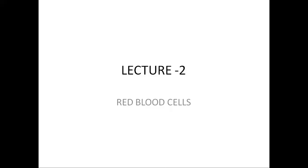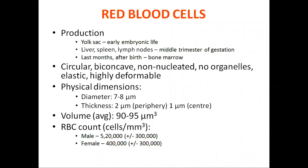Today we start our new topic — RBCs, also called erythrocytes. RBCs are circular, biconcave, disc-like cells; they are non-nucleated with no organelles. They can be highly deformed and are elastic in nature. Their diameter is about 7 to 8 micrometers, thickness at the periphery is 2 micrometers, and at the center only 1 micrometer. The average volume of RBCs is 92 to 95 cubic micrometers.